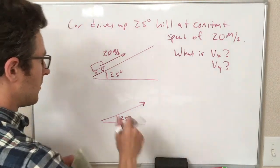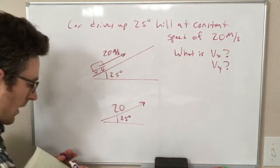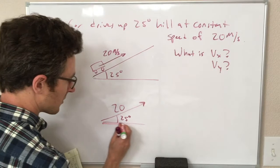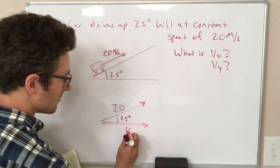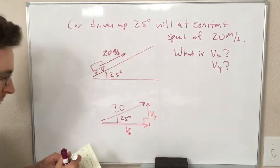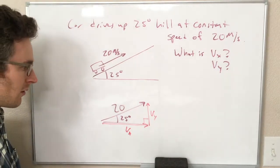and we want to figure out what our x and y components are. So our x and y components are going to look like this. This is Vx, this is Vy, they're at a right angle. So we have some right triangle trigonometry.